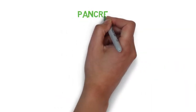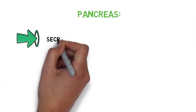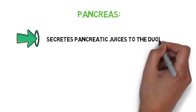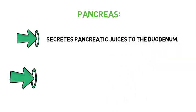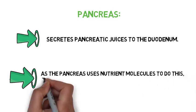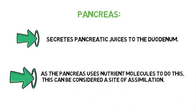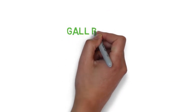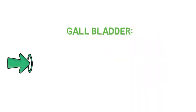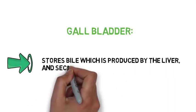The pancreas secretes pancreatic juices to the duodenum. As the pancreas uses nutrient molecules to do this, this can be considered a site of assimilation. The gallbladder stores bile, which is produced by the liver, and secretes it to the duodenum.